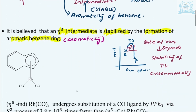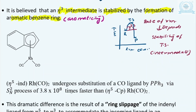The η3 intermediate is quite stabilized because of the formation of the aromatic benzene ring — in this case aromaticity is properly intact, maintained, and not disturbed. Due to this aromaticity, the stabilization of the intermediate is very high. Let me explain this with an example: η5-indenyl-Rh(CO)₂. When ligand substitution takes place — CO being replaced by PPh₃ — the incoming ligand is PPh₃, and this proceeds via the associative mechanism, the SN2 process.